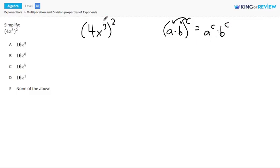In our problem, we can distribute the 2 to the 4 and to the x cubed, since those are the two pieces multiplied inside the parentheses. So this becomes 4 to the second power times x cubed also to the second power.